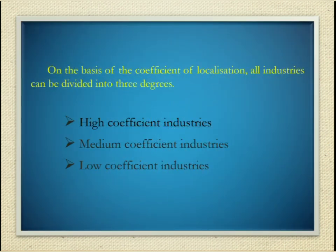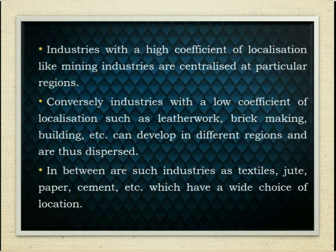The object of arriving at such an index is to classify industries according to their qualities of dispersion or concentration. On the basis of the coefficient of localization, all industries can be divided into three degrees: high coefficient industries, medium coefficient industries, and low coefficient industries. Industries with a high coefficient of localization, like mining industries, are centralized at particular regions. Conversely, industries with a low coefficient of localization, such as leather work, brick making, and building, can develop in different regions and are thus dispersed.